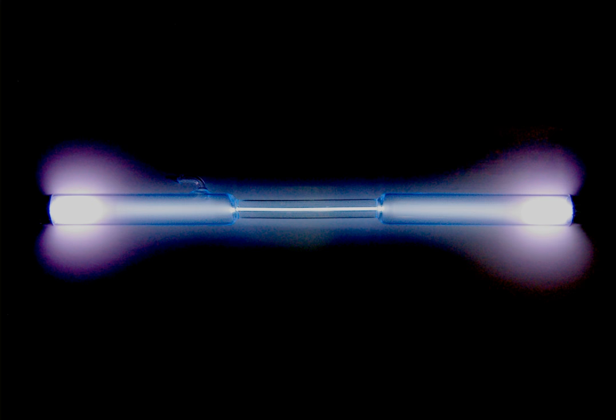Xenon is a chemical element with symbol Z and atomic number 54. It is a colorless, dense, odorless noble gas found in the Earth's atmosphere in trace amounts.